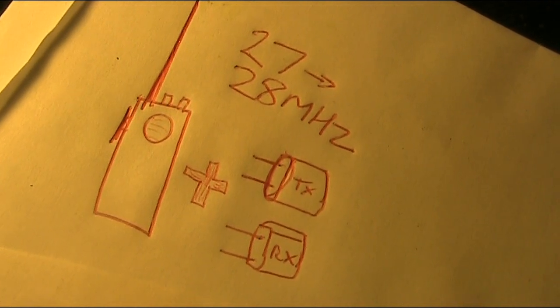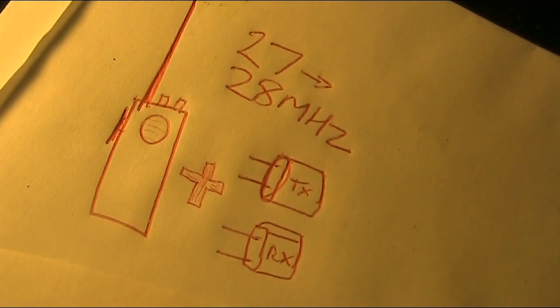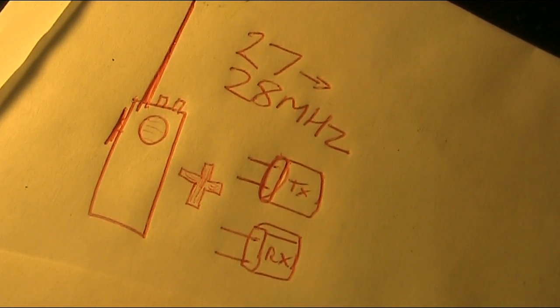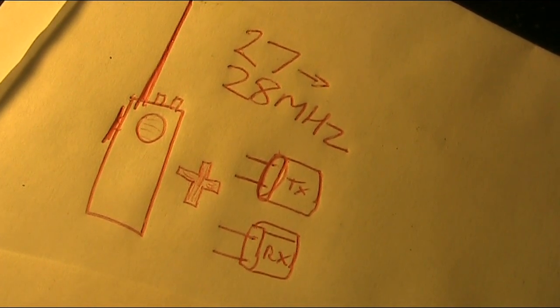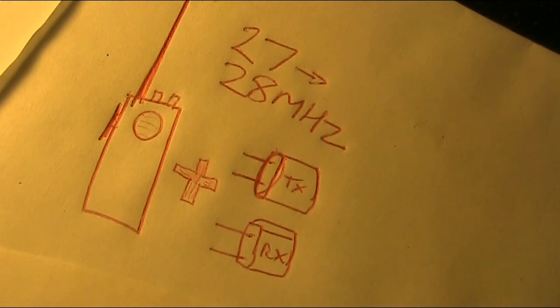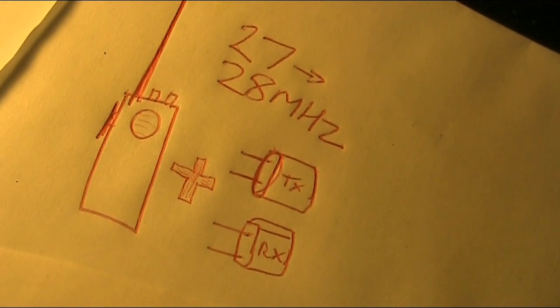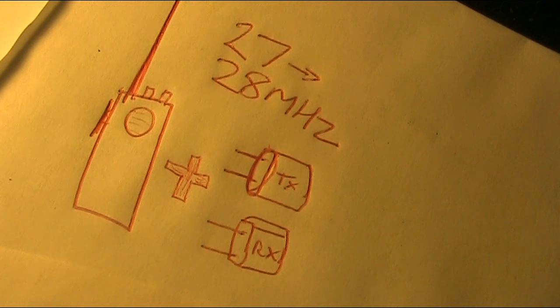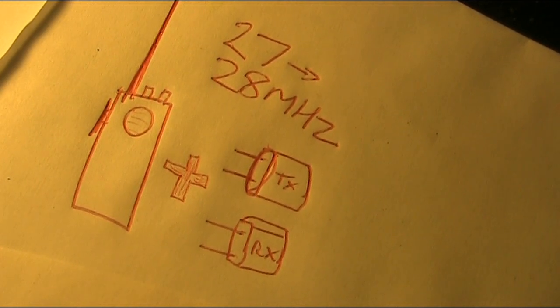A 27 MHz handheld CB radio, the type that is crystal controlled with crystals for both the transmit and receive, and suitable crystals. That can be the hard part, but at least if you're in Australia, you may just have something in your junk box.